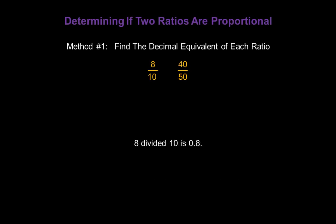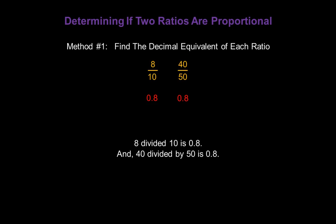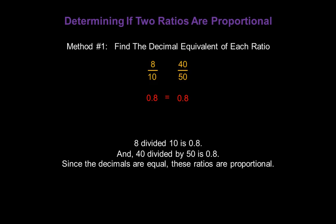Look at the first ratio, 8 over 10. That's 8 divided by 10, which gives us a decimal answer of 0.8. In the second ratio, 40 divided by 50 is also 0.8. Since the decimals are equal to each other, that means the original ratios are proportional.